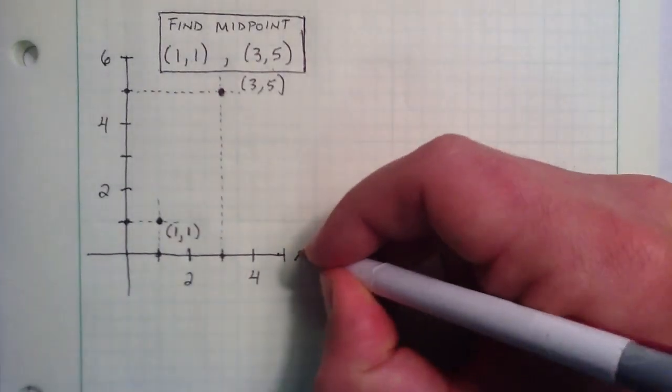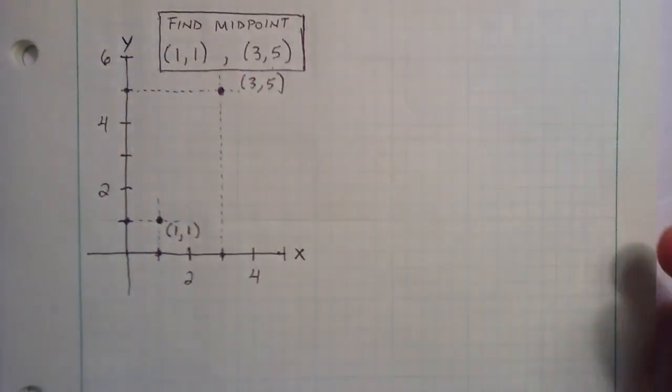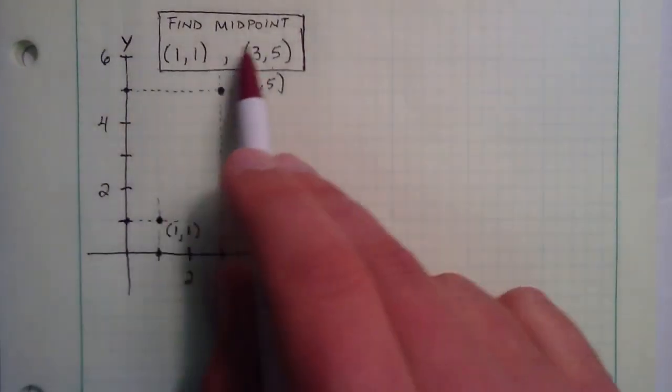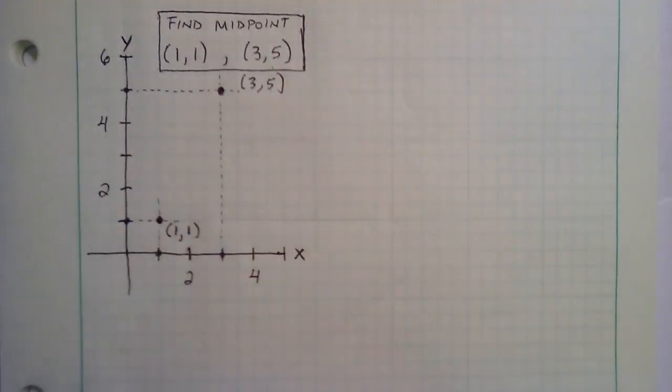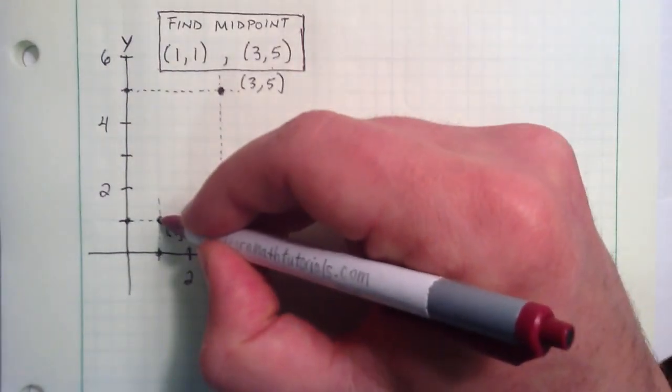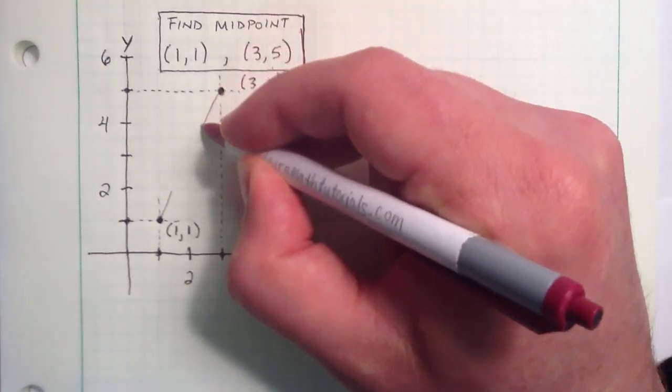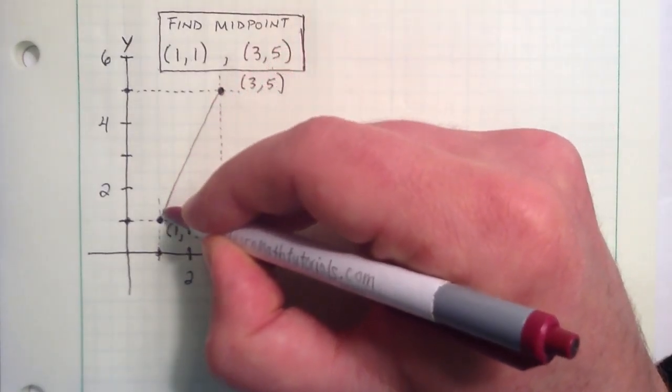And let me just go ahead and label this x and y so it's clear. So we want to find the midpoint between these two points. And the answer is actually going to be the same as the center of the line segment connecting these two points.